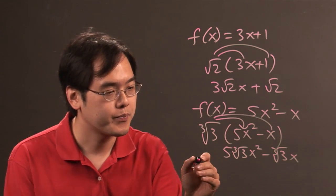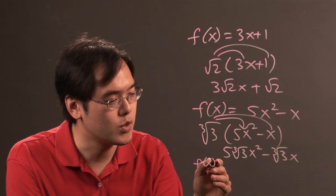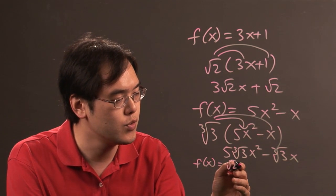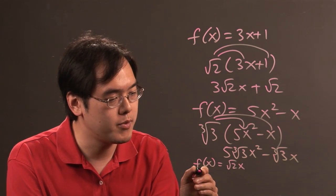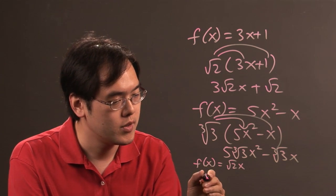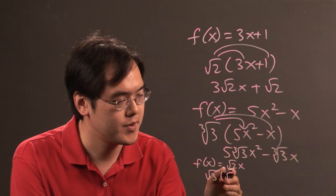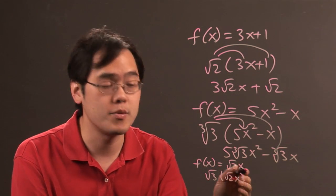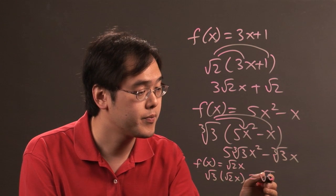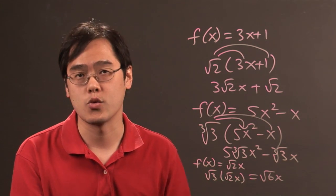if you have a function f of x is equal to square root of 2x, then if you were to multiply square root of 3 by this, then square root of 3 times square root of 2 is going to be square root of 6 and you have square root of 6x.